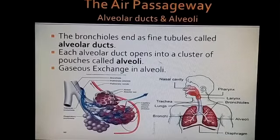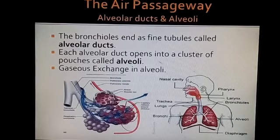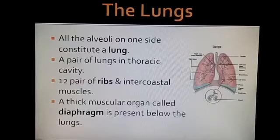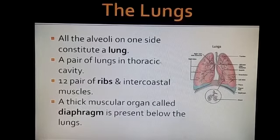The main part of gaseous exchange is basically the alveoli. Each alveolar duct opens into a cluster of pouches, and these pouches are known as alveoli. So the topic of the air passageway ends at the alveoli.